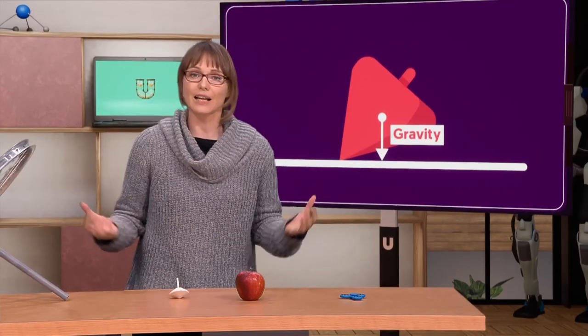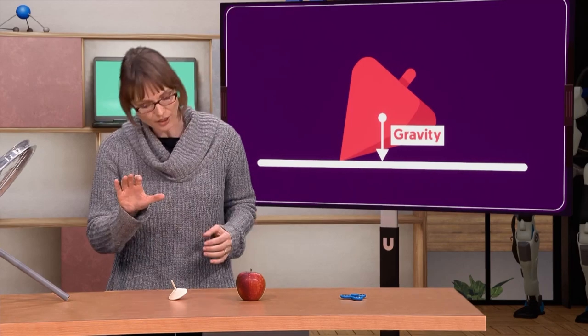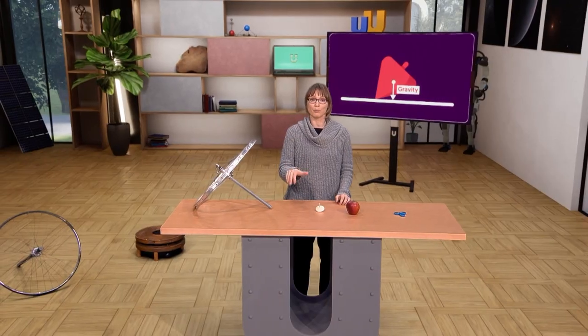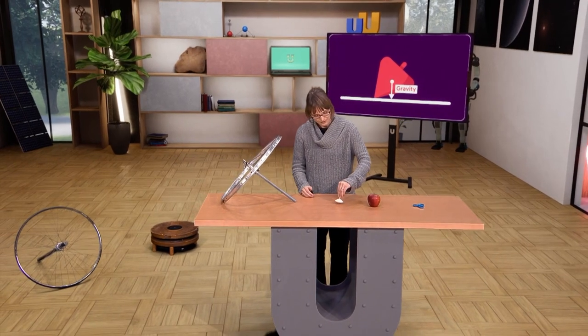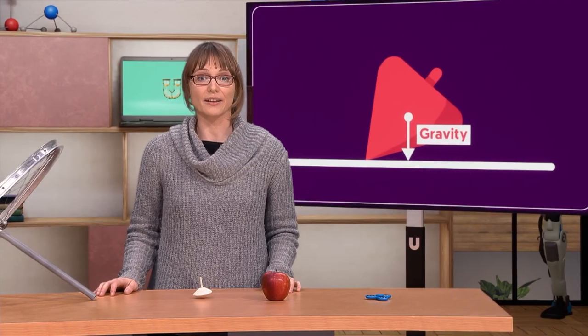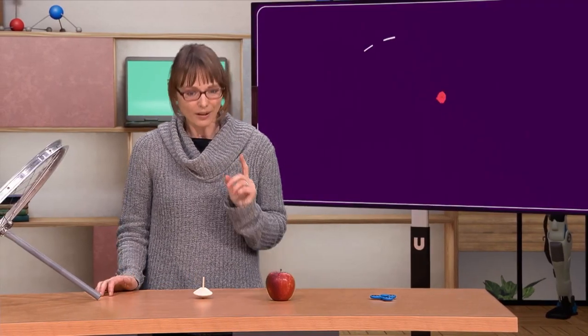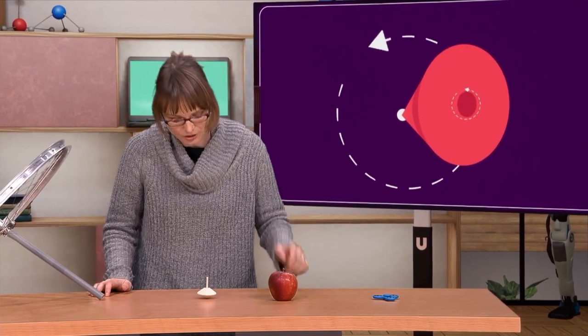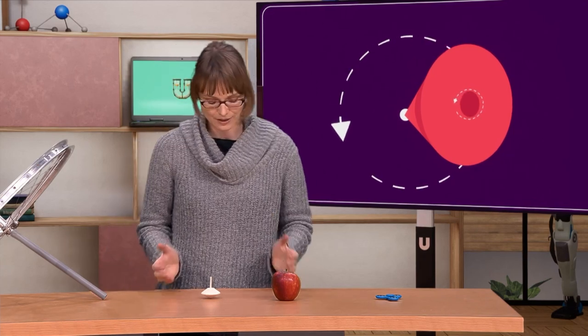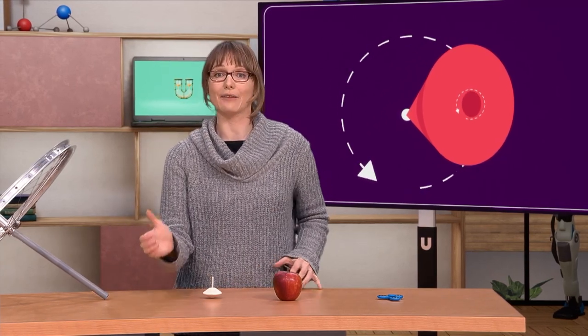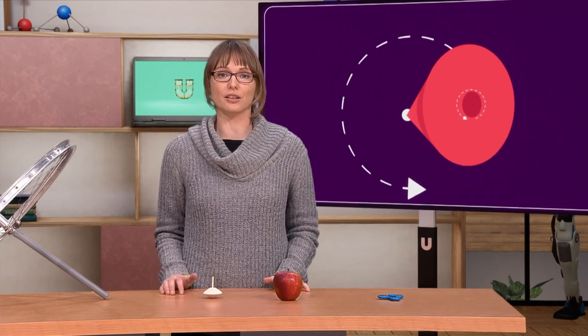So again, we have something like a couple of forces that you think would make the top fall down. But observe, while spinning, it's not falling, but it is also performing a second rotation about the vertical axis.